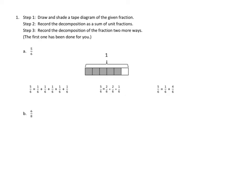Take a look at problem number 1 here in the homework. Problem number 1 asks us to do a couple of things. Step 1: draw and shade a tape diagram of the given fraction. Step 2: record the decomposition as the sum of unit fractions. And step 3: record the decomposition of the fraction in two more ways. The first one has been done for us, so let's see what they did in 1a and make sense of this.